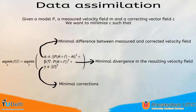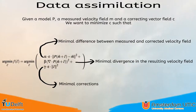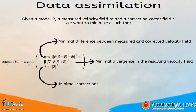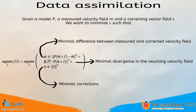In our framework, we use a minimization process. Given a measured velocity field and a model, we try to determine the optimal correcting vector field. To determine the optimal correcting vector field, we have three conditions: we want to minimize the difference between the output of the model and the measured data; we also want the output of the model to have the least amount of divergence; and lastly, we want to minimize the corrections. The importance of these three conditions can be guided by the user using the alpha, beta, and gamma parameters.